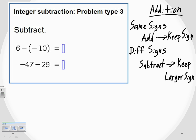I've got the rules written up here for addition. Even though this is a subtraction problem, we're going to use that remembering device called keep change change. We're going to use that to change subtraction into addition. Why? Because we really want to use those addition rules. Instead of remembering different rules for both addition and subtraction, we can use keep change change to turn subtraction problems into addition problems and only have one set of rules to remember.